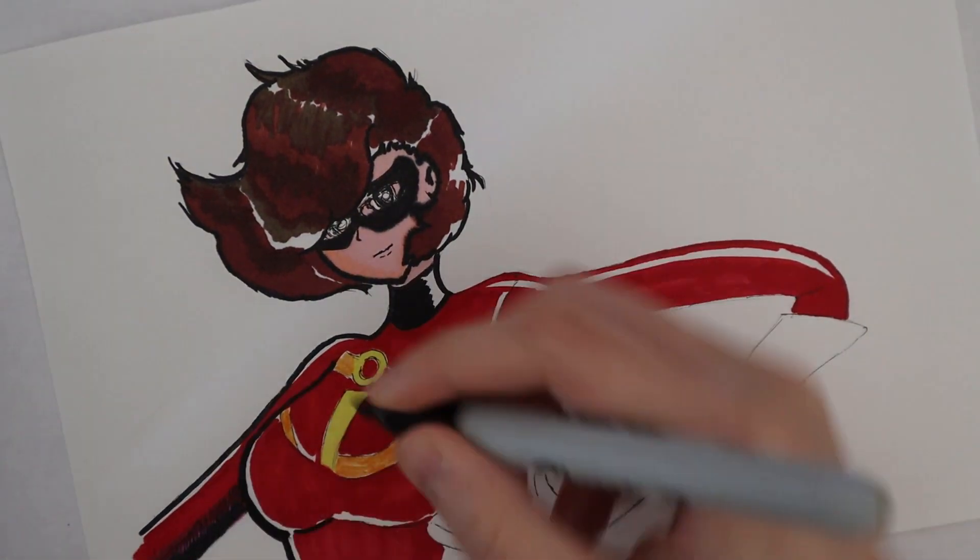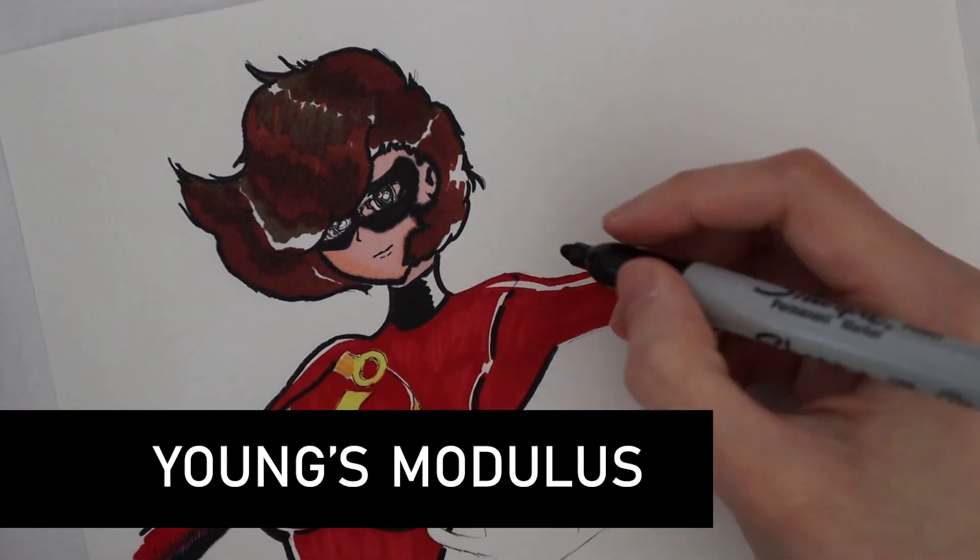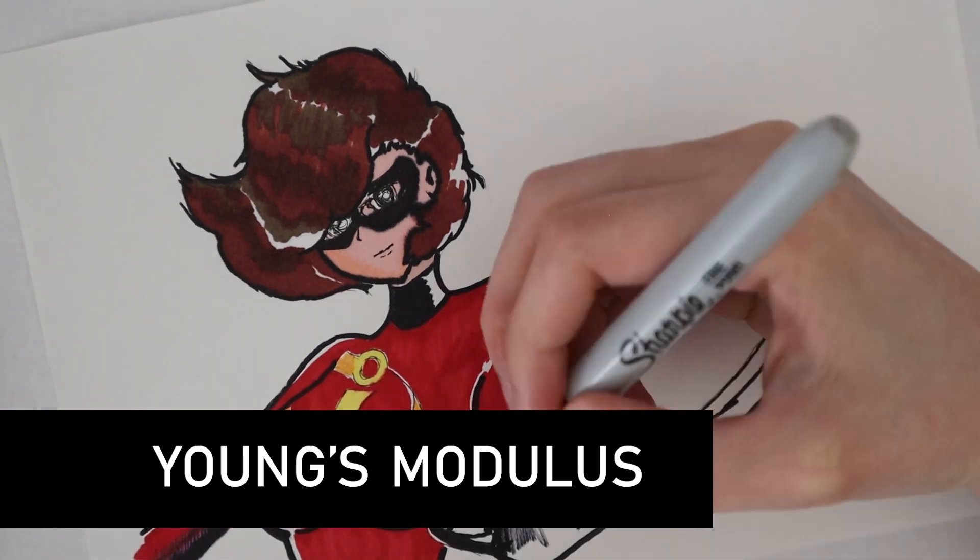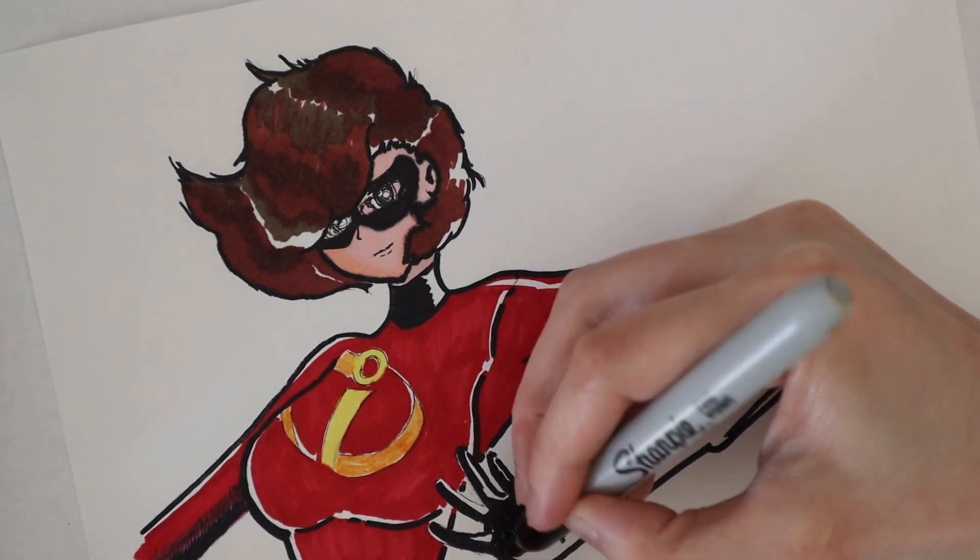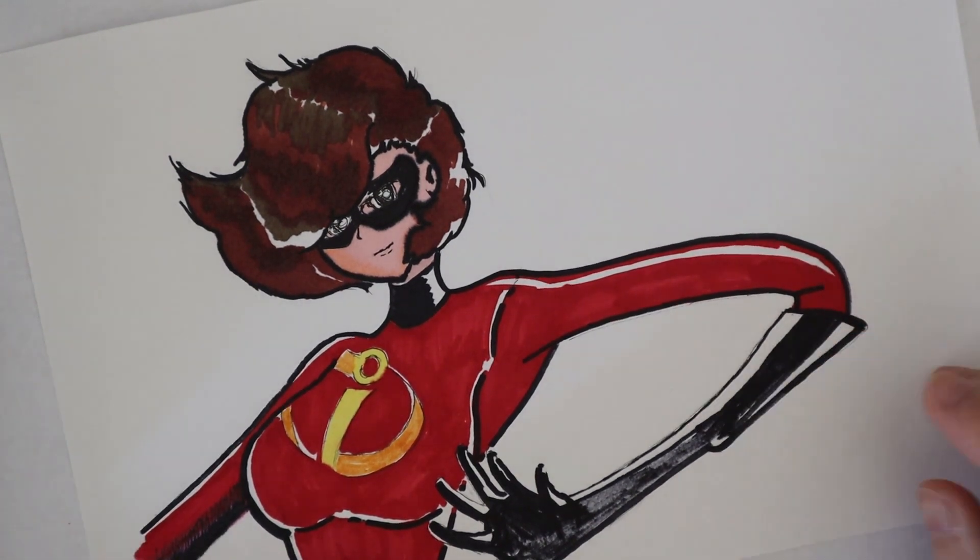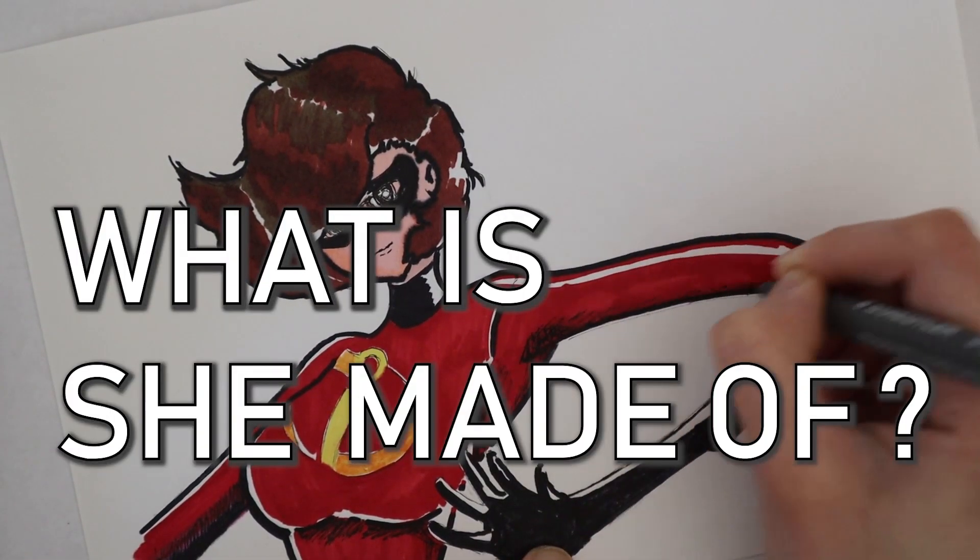Do you remember Elastigirl from The Incredibles? She's the mom also known as Mrs. Parr. Her superpower is elasticity and flexibility. Pixar never told us how she gained this superpower or what she's made of.